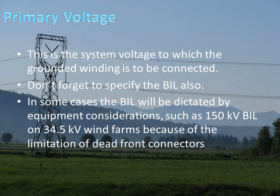Primary voltage is the system voltage to which the grounding transformer is going to be connected. Don't forget to specify the BIL. In some cases, the BIL will be dictated by equipment considerations — for example, 150 kV BIL equipment on 34.5 kV wind farms because of the limitations of dead front connectors available. There is still a large installed base of 34.5 kV wind farms operating at 150 kV BIL because of the cable connections.